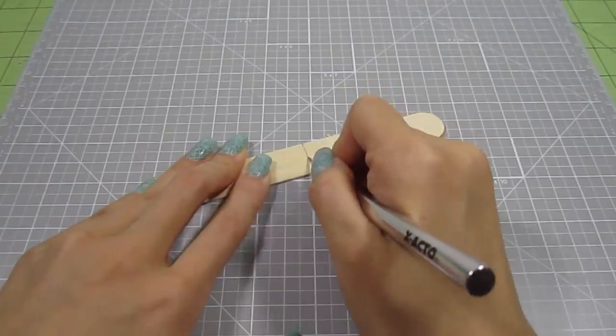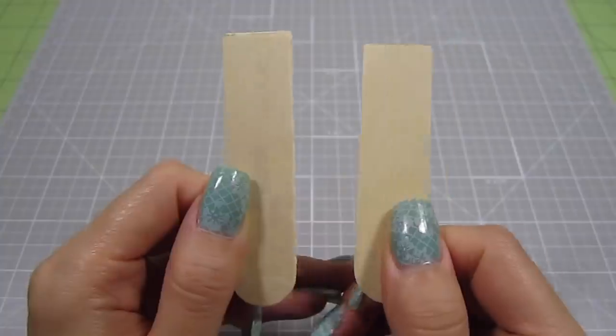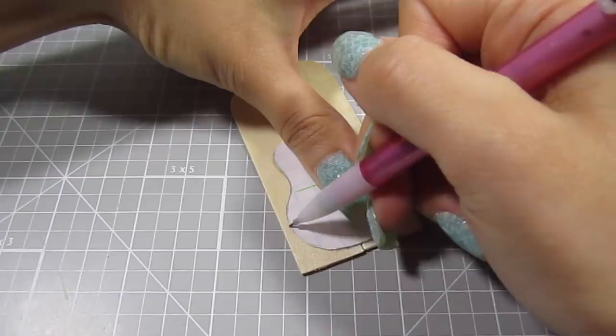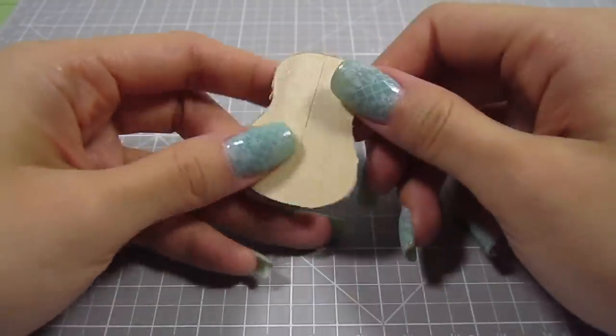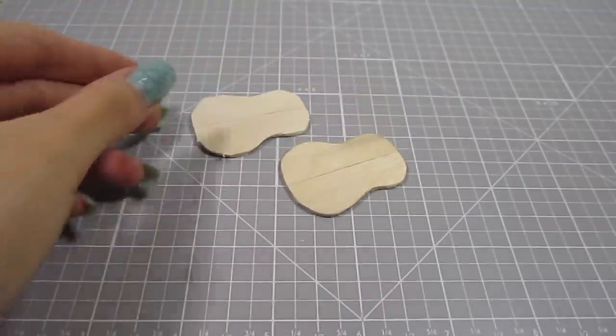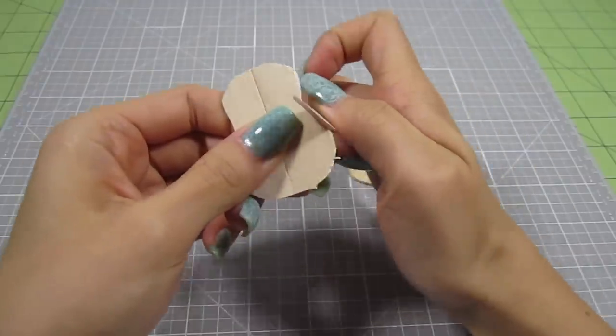Grab a jumbo popsicle stick and split it in half. Then glue them together to create a wide panel. Trace around the template and cut off the excess wood. Make two of these, one for the front and one for the back. Sand them to smooth out any rough edges.